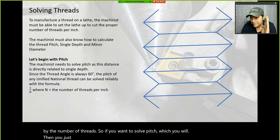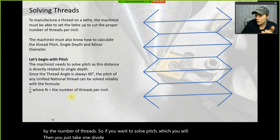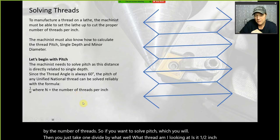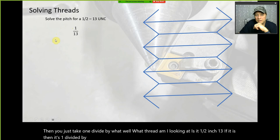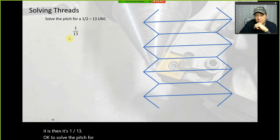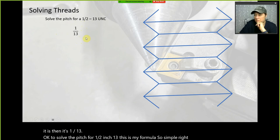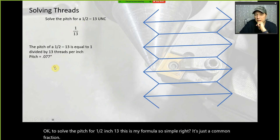Pitch equals one divided by the number of threads. If you want to solve pitch for a half-inch 13 thread, it's one divided by 13. It's just a simple fraction.